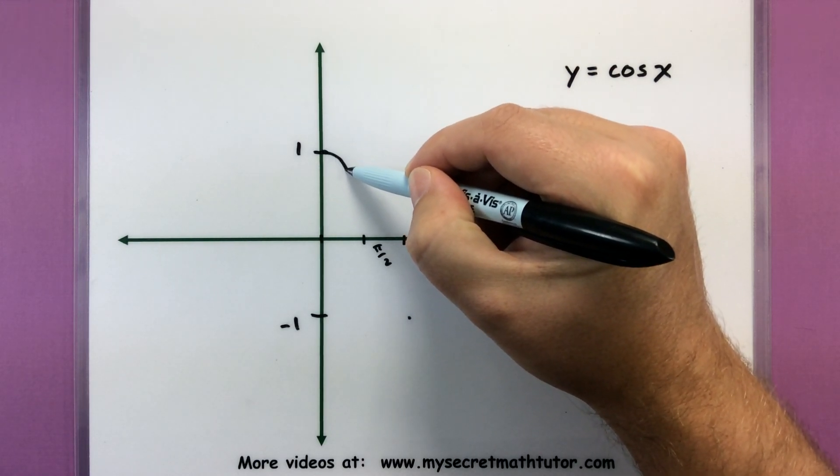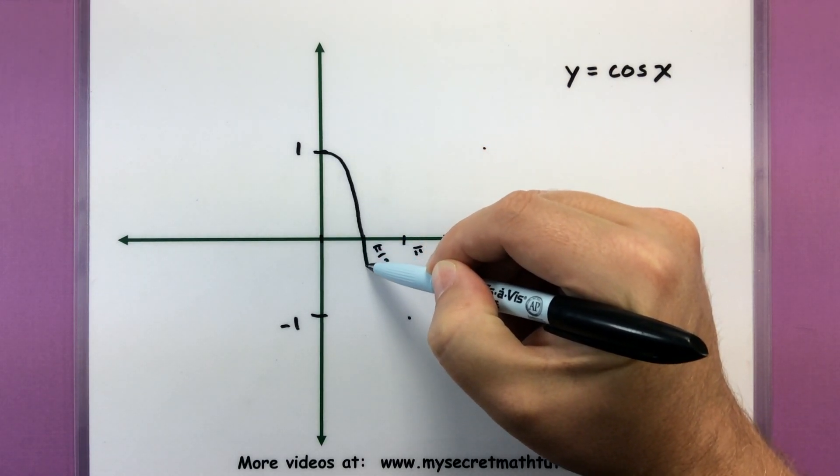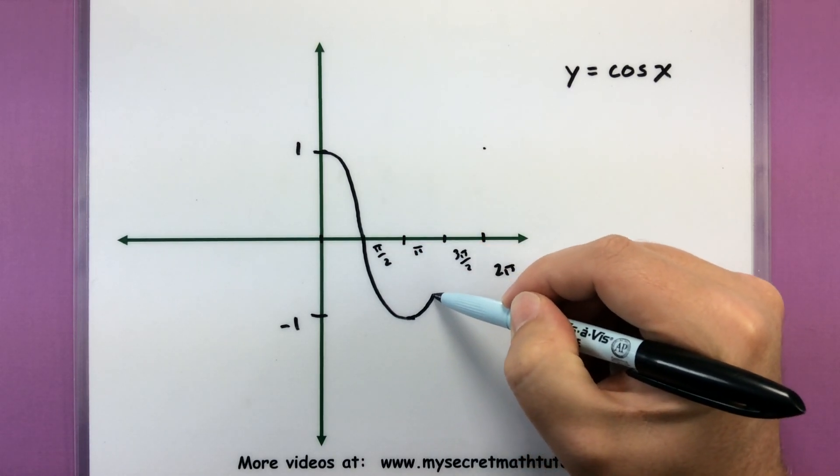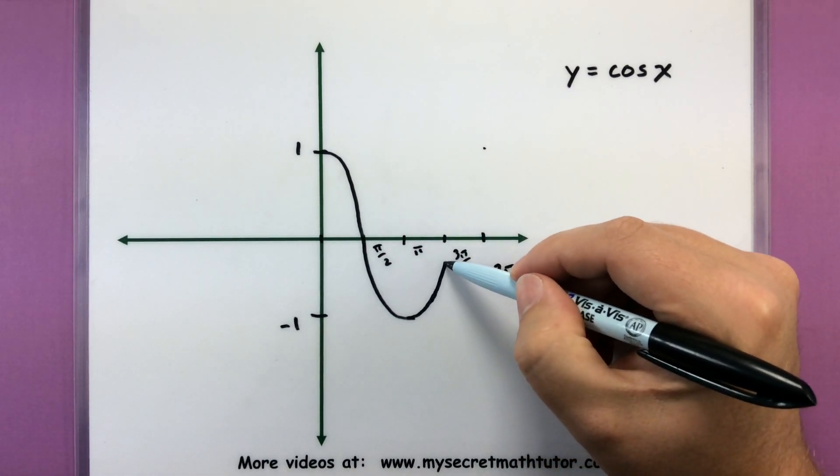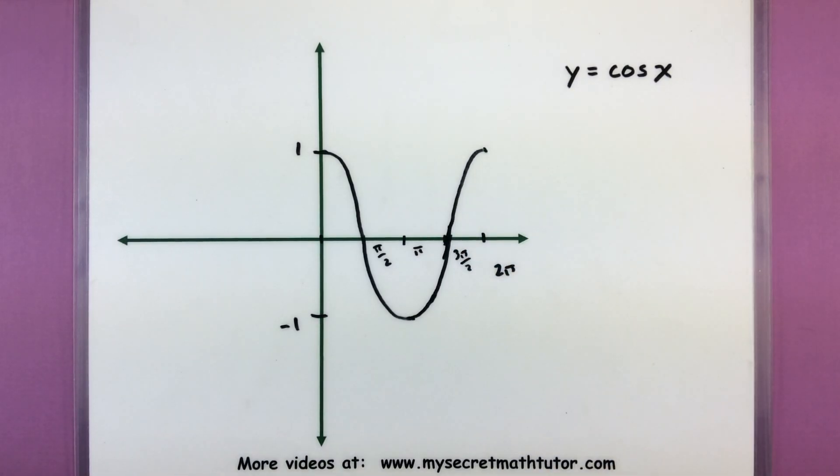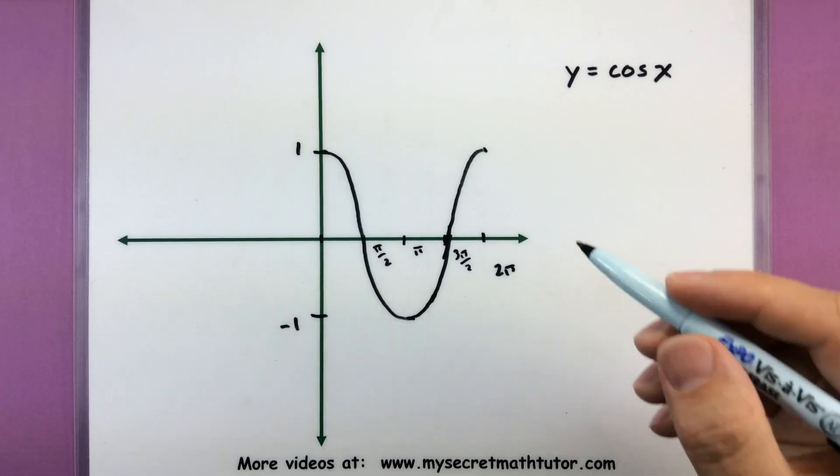So starting up here, we're going down through the x-axis, bottoming out right at pi, going back up, going through that 3 pi over 2, and peaking out right at 2 pi. So here is one cycle or one period of cosine.